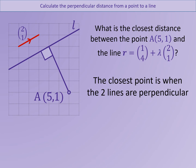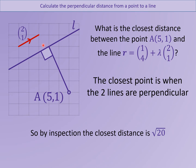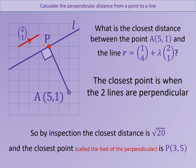In this case we can actually solve this problem by inspection. We can see that to go at right angles we could use Pythagoras' theorem: 2 squared plus 4 squared, square rooted, gives us root 20. The closest point on the line, labelled P, to point A is called the foot of the perpendicular. In this case, point P, the foot of the perpendicular, has coordinates (3,5).